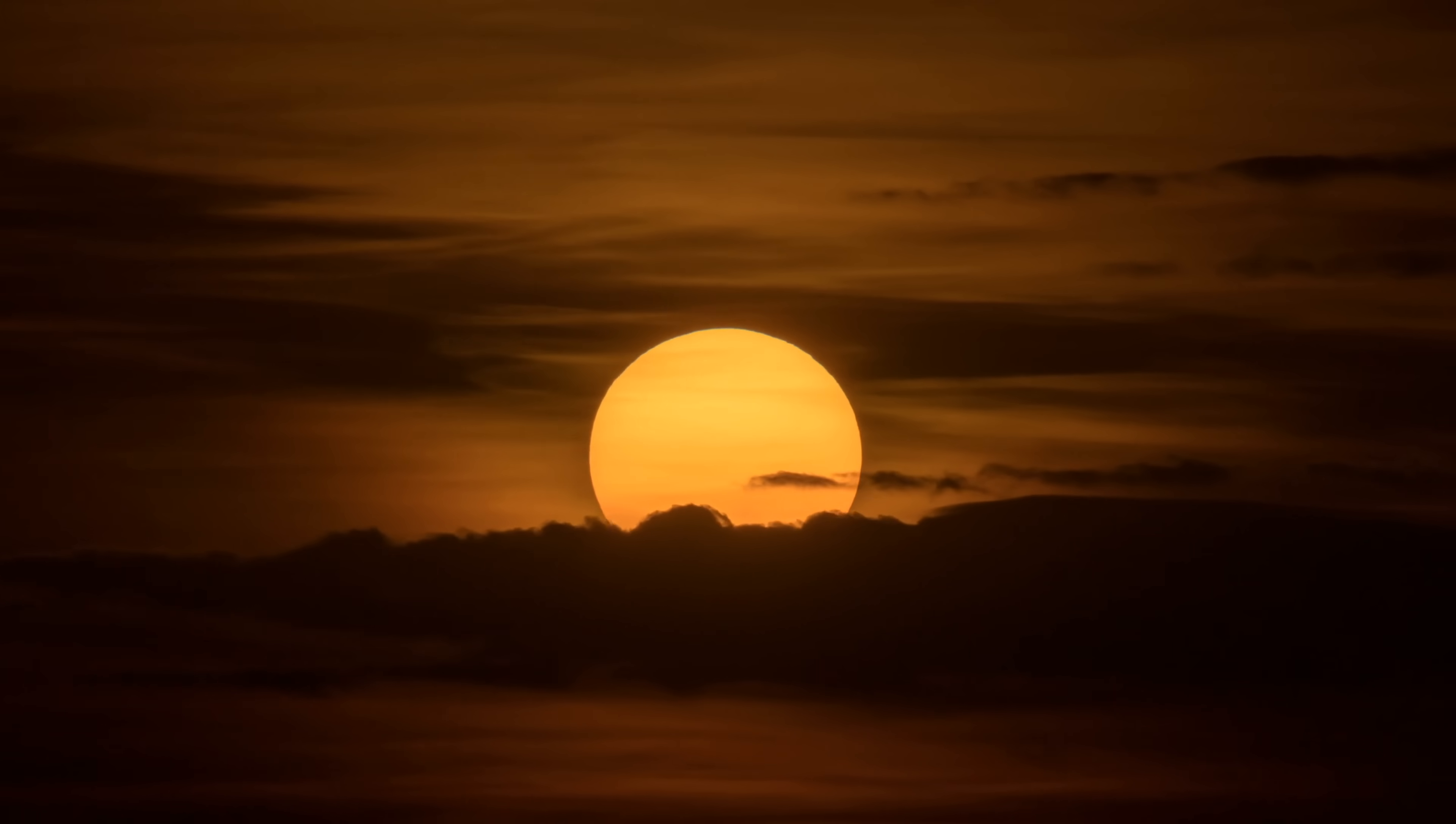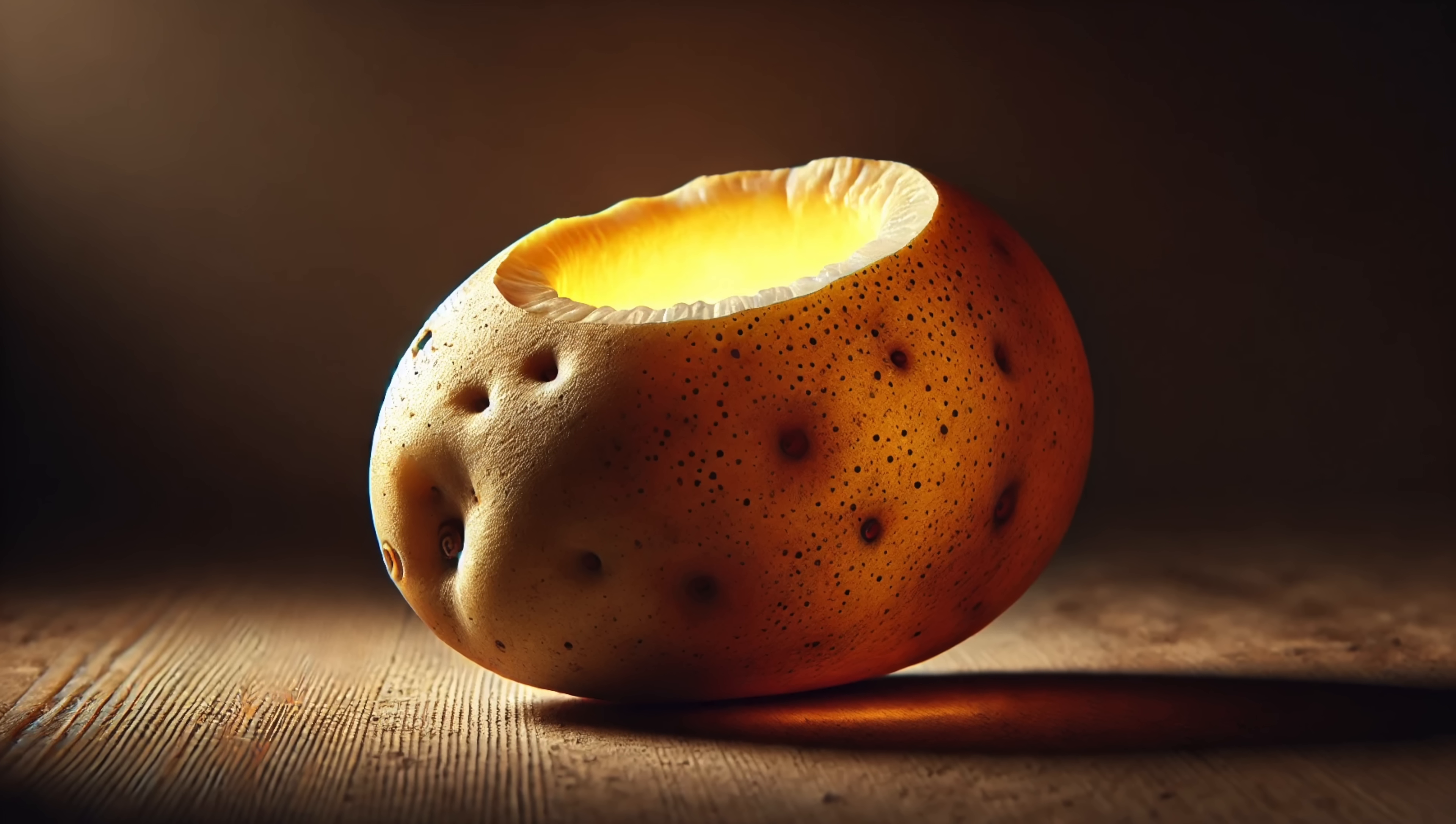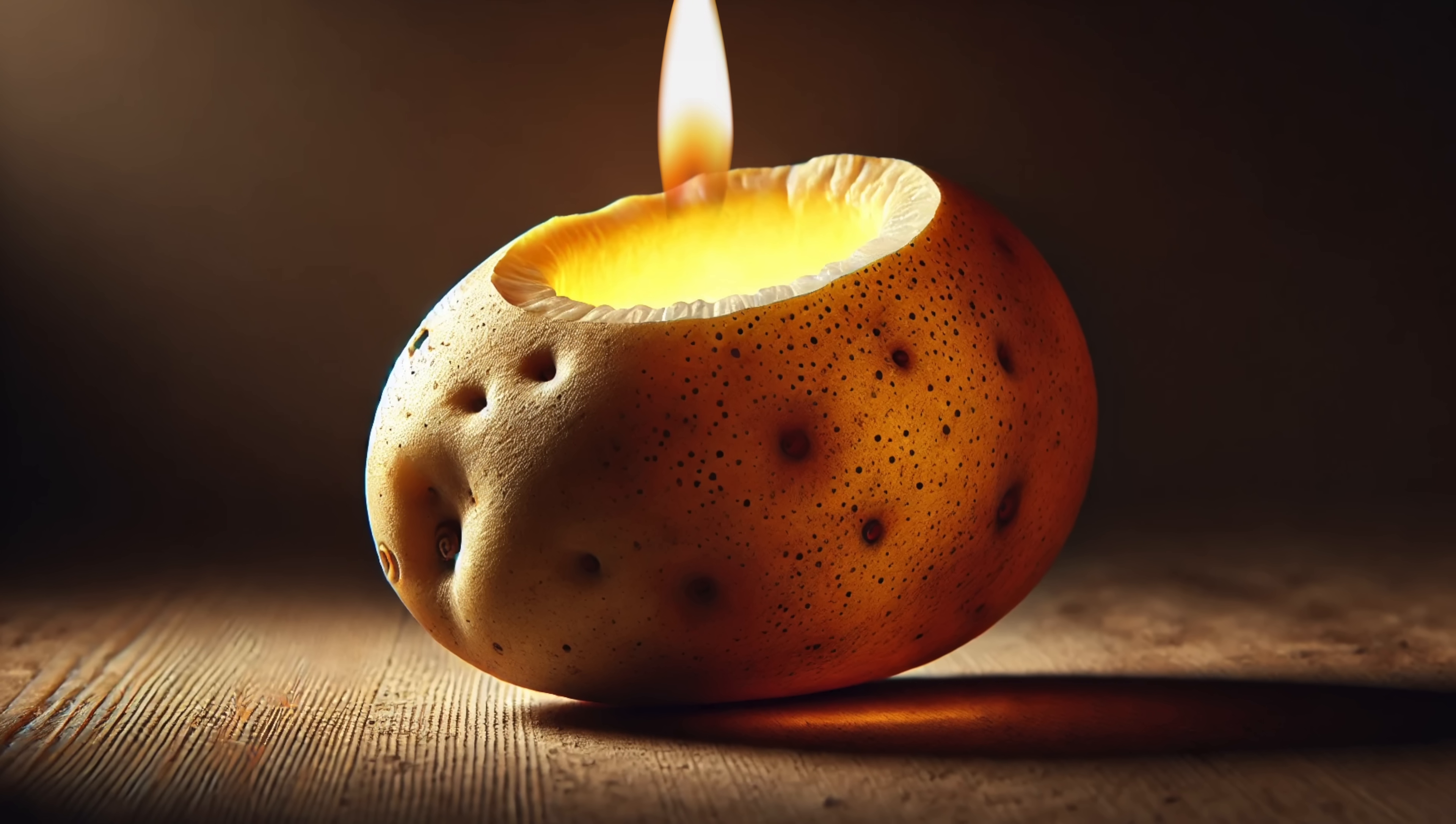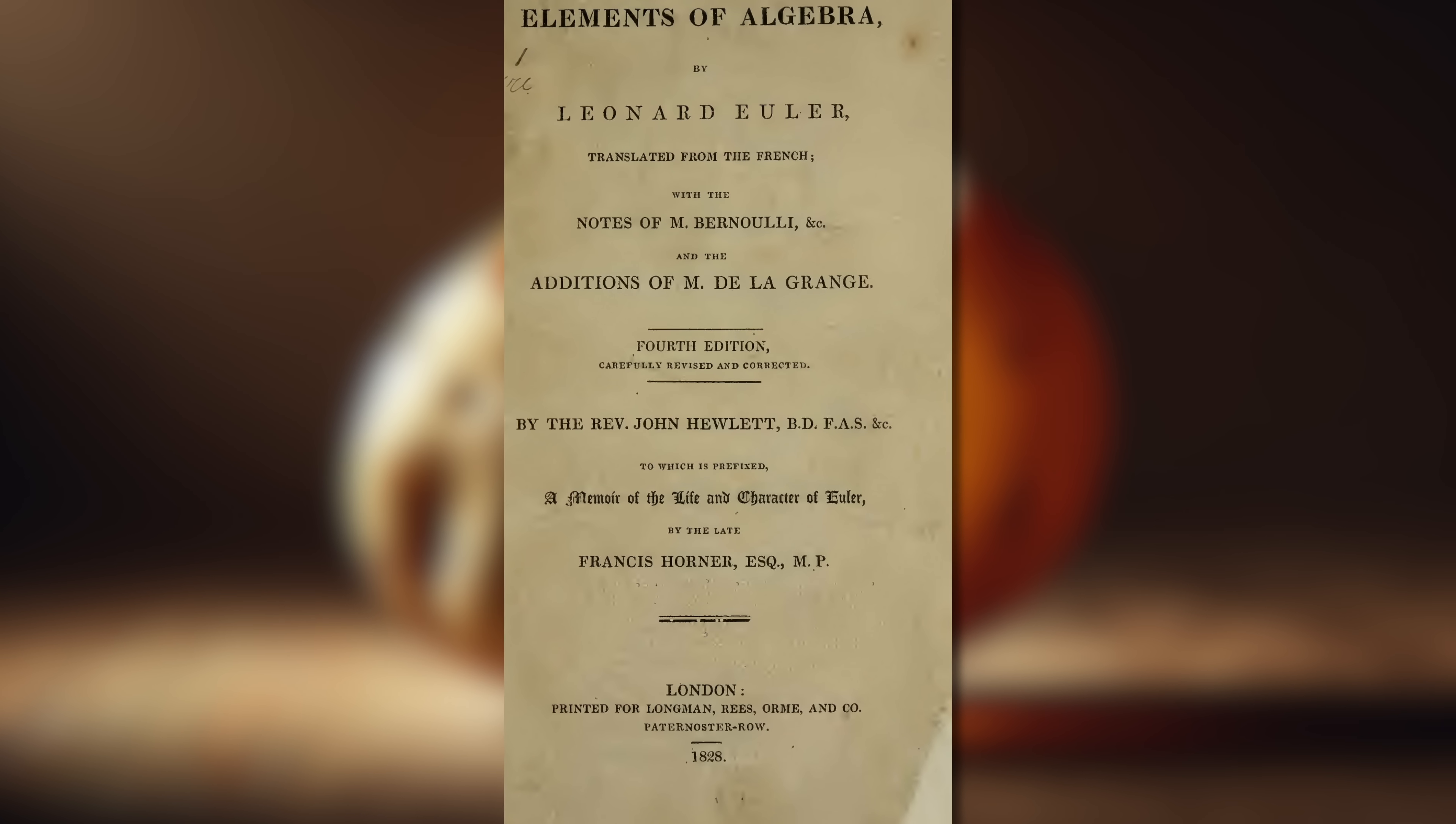Carl's studies, though, were often cut short by sunset, as his parents couldn't afford candles. So, Carl decided to build a makeshift candle out of a potato or turnip that he filled with fat and lit, so he could read Leonard Euler's famous algebra textbook late into the night.